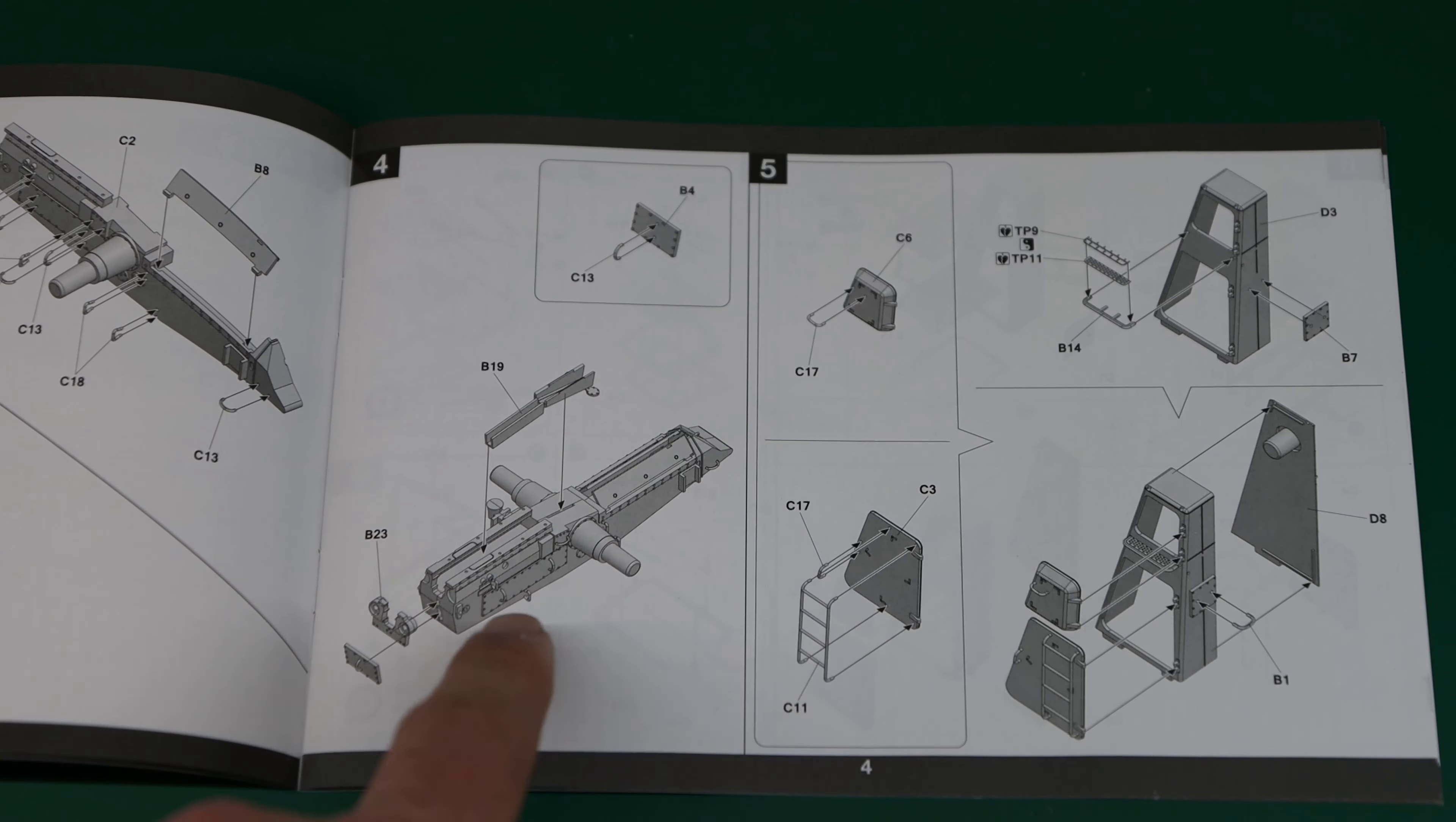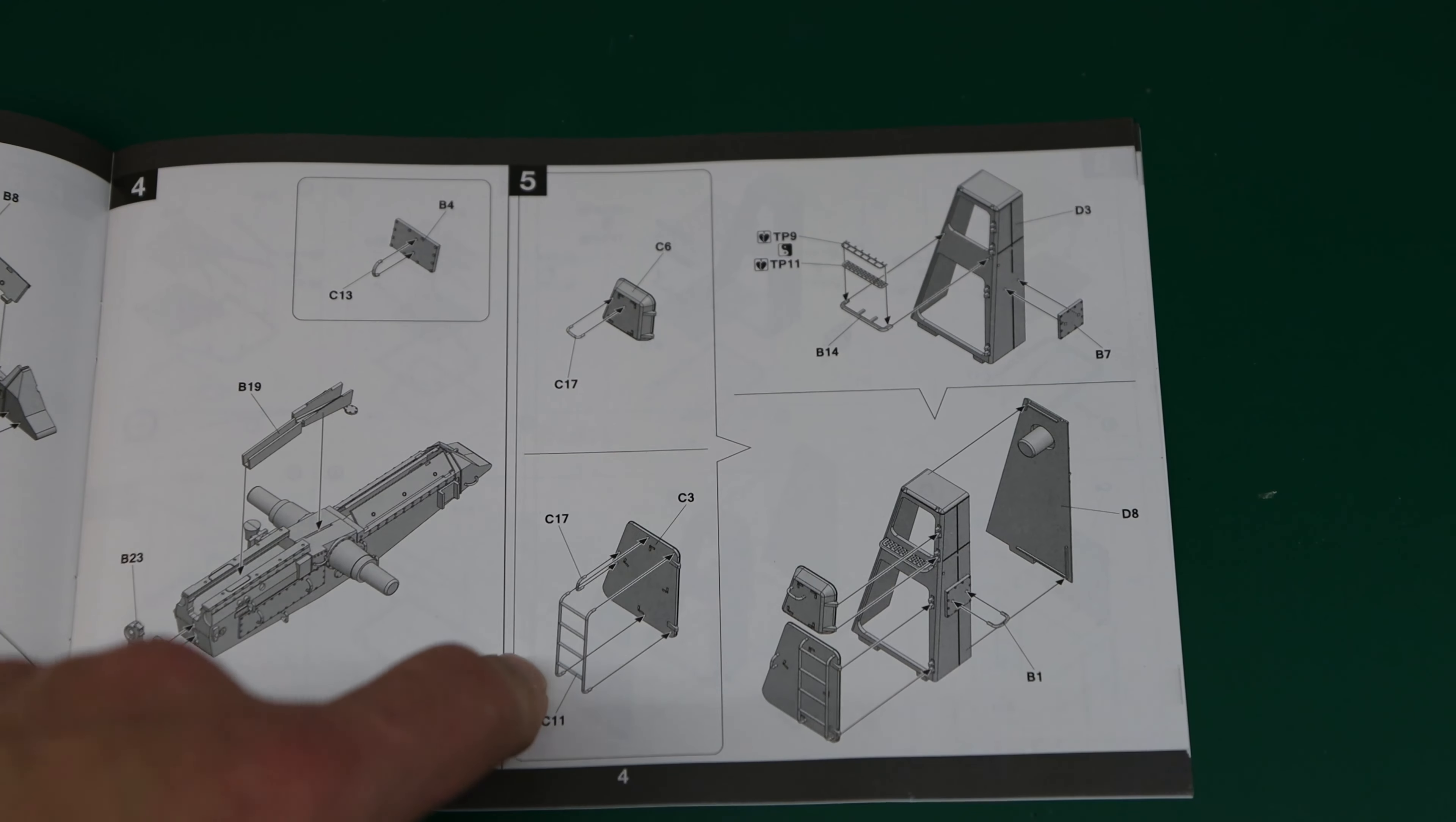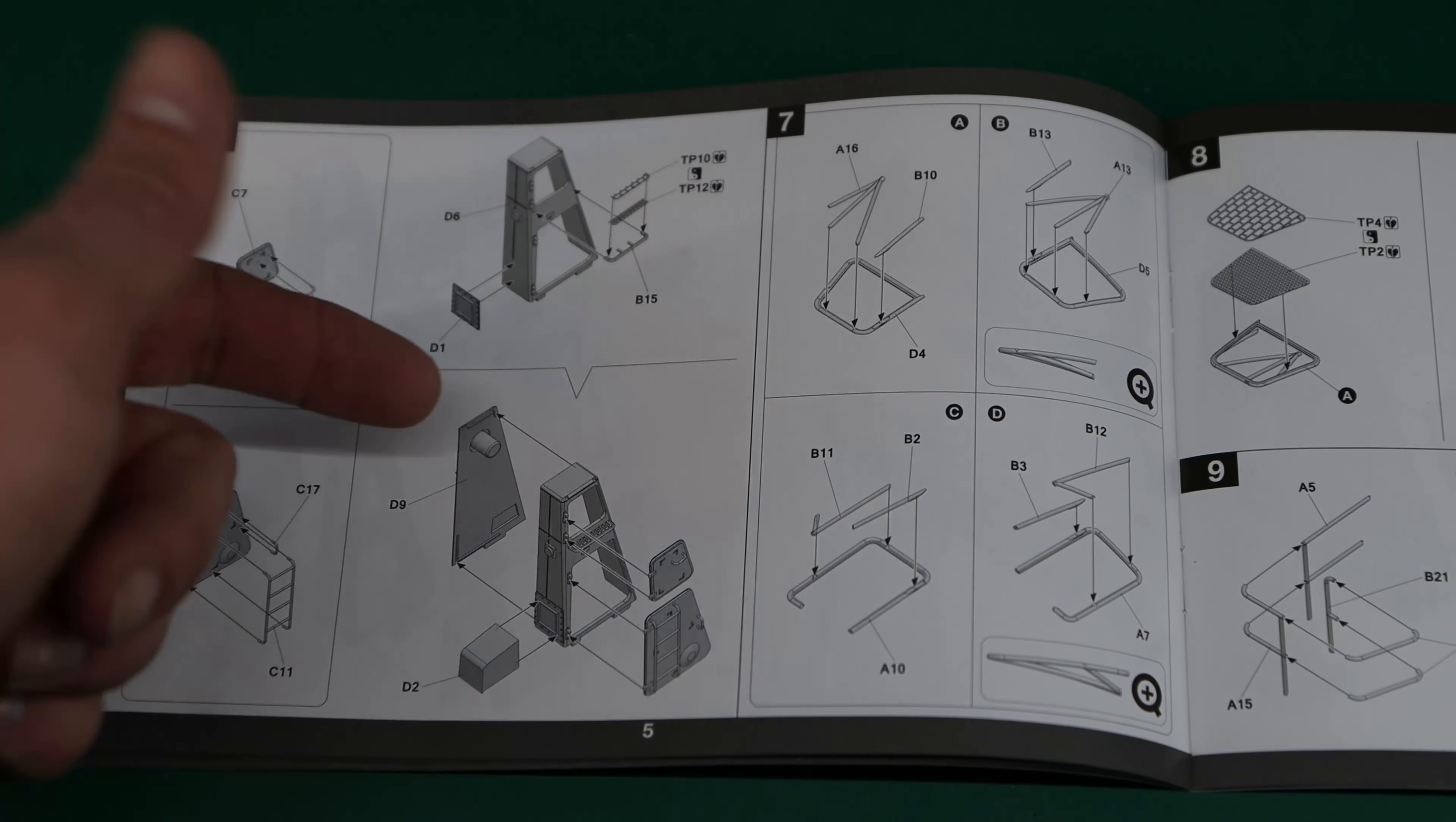In step four we fit the guide for the actual missile where it mounts to it as well as a few end pieces. Step five, building up some of the door hatches for the one end pylon and closing that all in, some grab iron details. Step six is the same thing but for the other side.